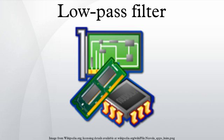The pseudocode function low_pass takes input samples x[0..n], time interval dt, and time constant rc. It initializes the smoothing factor α = dt / (rc + dt), sets y[0] = x[0], and for i from 1 to n computes y[i] = α * x[i] + (1 - α) * y[i-1], returning the output array y.